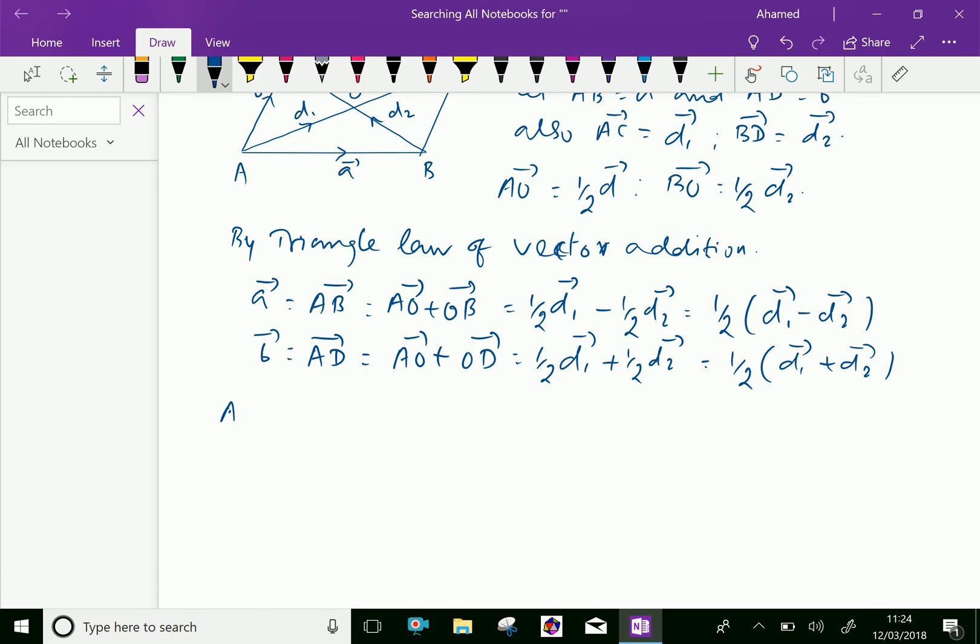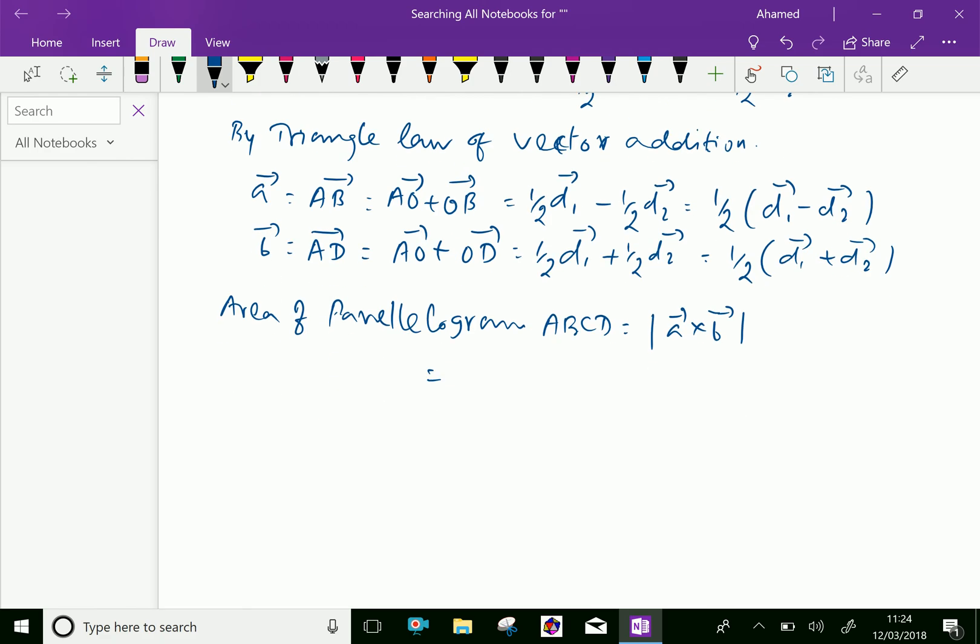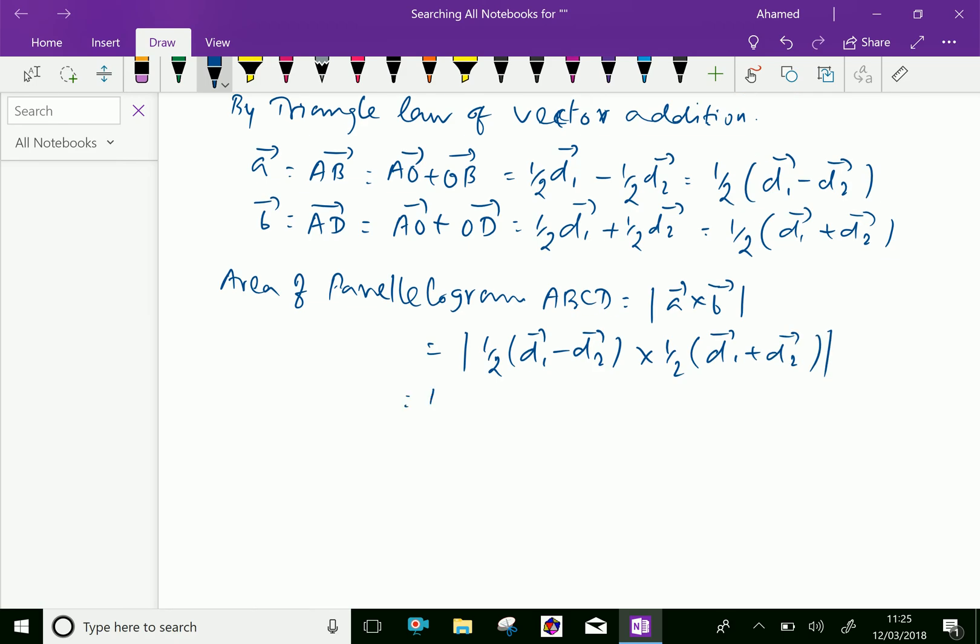Now, area of parallelogram ABCD equal modulus of vector A cross vector B. Which is equal, vector A is modulus of half, vector D1 minus vector D2 cross vector B, which is half D1 plus D2.